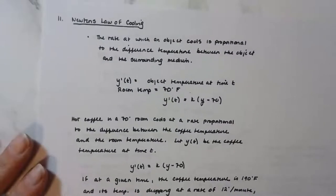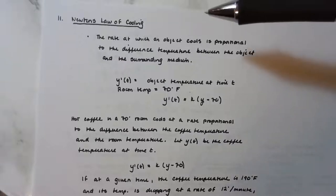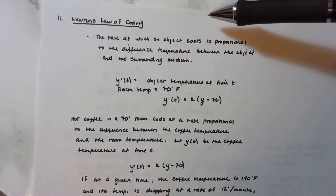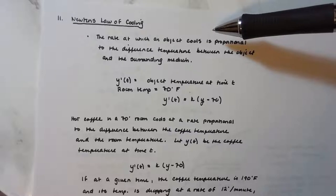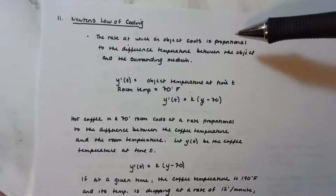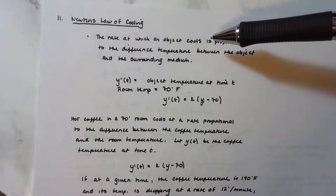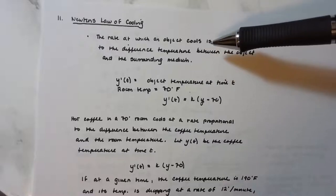Another application is Newton's Law of Cooling, which states that the rate at which an object cools is proportional to the difference in temperature between the object and its surrounding medium. For example, if we pour a hot cup of coffee from the Keurig and set it on a table in an 80-, 70-, or 60-degree room, the coffee will cool proportional to the difference between its temperature and the room temperature.